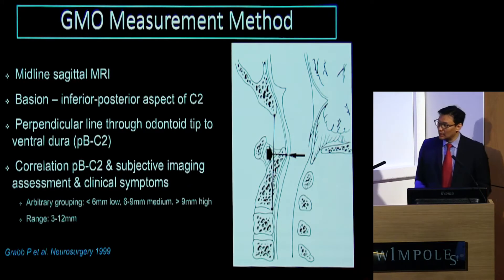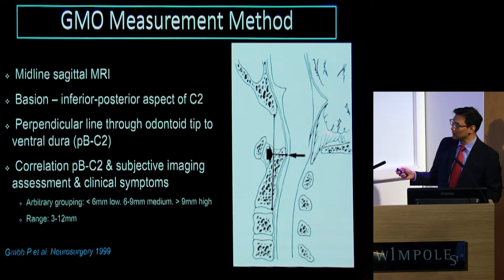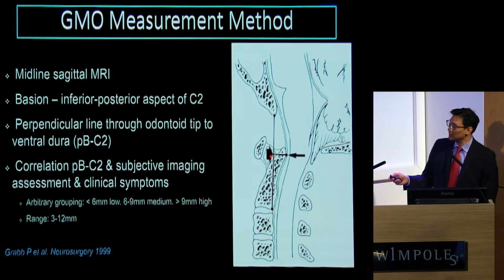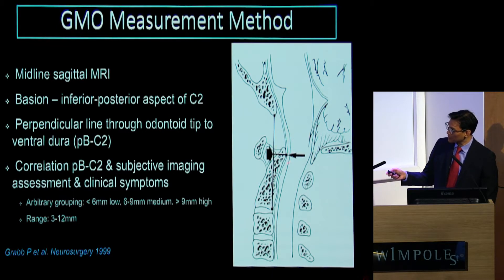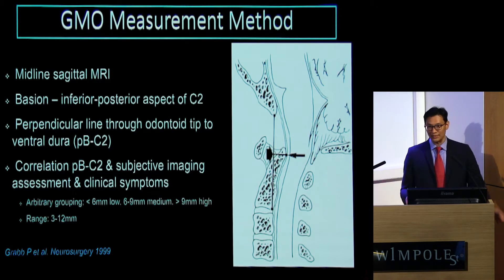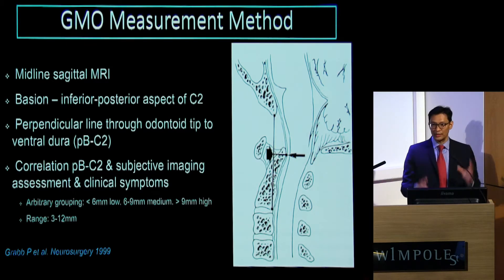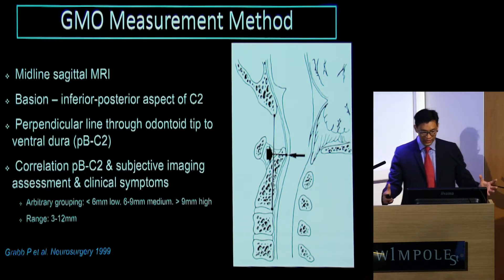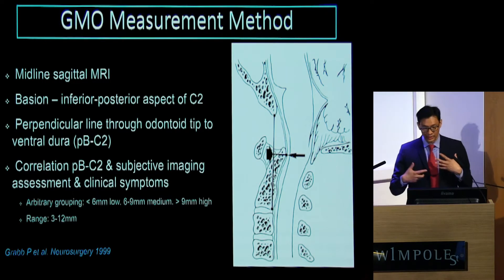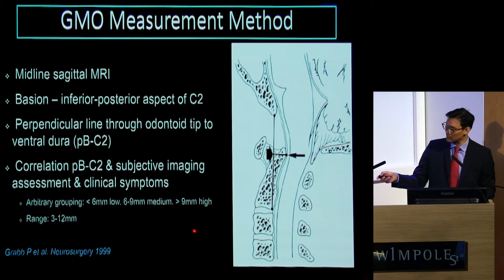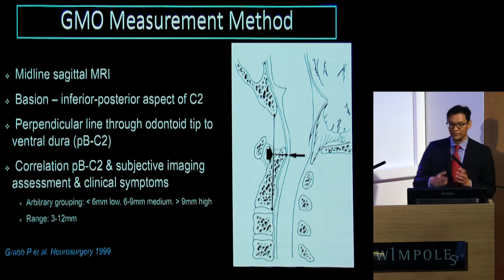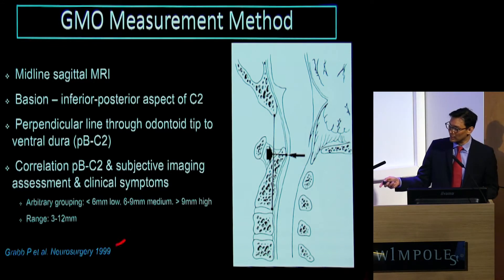The measure itself is quite elegant. What you do is subtend a line from the tip of the basion to the posterior-inferior aspect of C2, and then a perpendicular plumb line to the ventral-dural aspect — so that's your cervical medullary junction, ventral spinal cord — and that's the measure. In the paper they described this on a midline sagittal MRI, then arbitrarily grouped measurements for this cohort of paediatric patients with Chiari-1 malformations: 6mm for low risk, 6–9mm for medium risk, and above 9mm. There was a fairly good range in terms of measures.